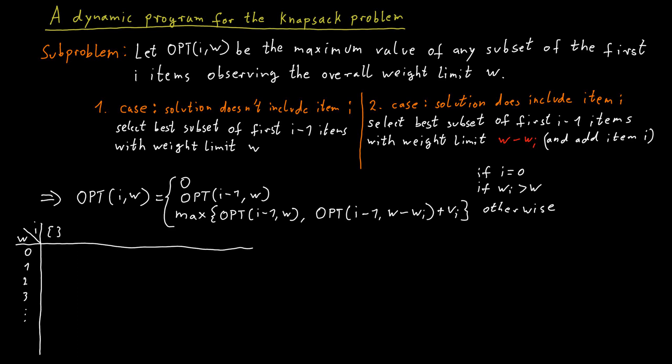So the first column corresponds to the empty set where I'm not allowed to use any of the items. And then the second column corresponds to the set only containing the first item, so that's the only item I'm allowed to use. The third column would correspond to the first and the second item that I'm allowed to use, and so on. And the goal is to just fill out the values in this table with the values of those sub-problems.